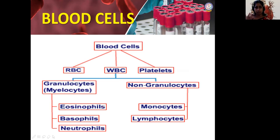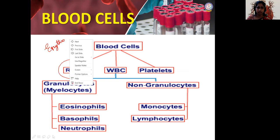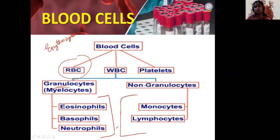RBC are otherwise called erythrocytes, WBC are called leukocytes, and platelets are called thrombocytes. WBC are further classified into two groups depending on granules: granulocytes (if granules are present) and agranulocytes (if not). There are totally five types of WBC. Under granulocytes we have three subdivisions — eosinophils, basophils, and neutrophils — and under agranulocytes we have monocytes and lymphocytes.